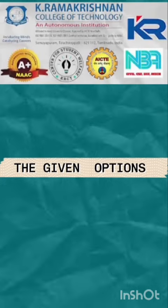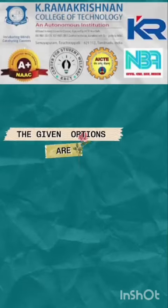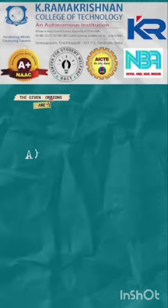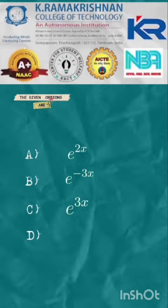The given options are: a. e power 2x, b. e power minus 3x, c. e power 3x, d. e power minus 2x.